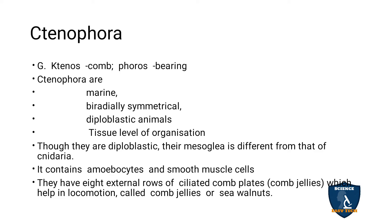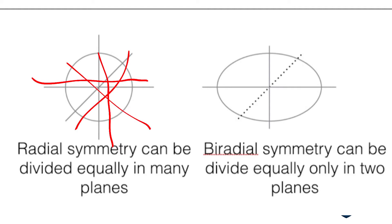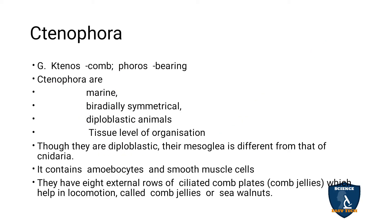Their symmetry is biradial. Radial symmetry means you can cut at any plane and get equal halves. But biradial means it can only be cut in one plane to give two equal halves. So Ctenophora shows biradial symmetry.